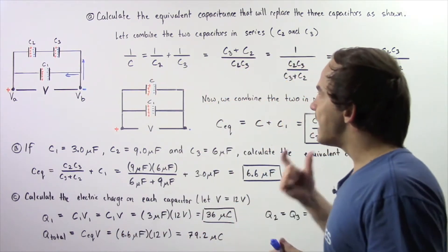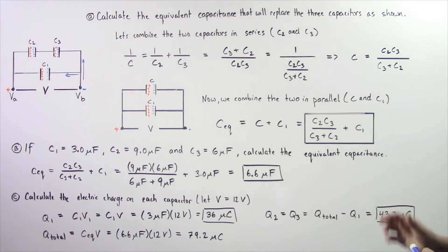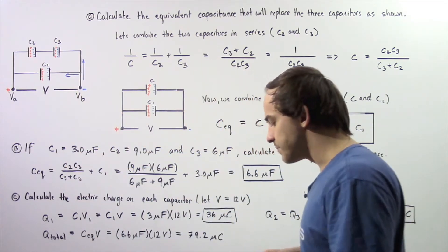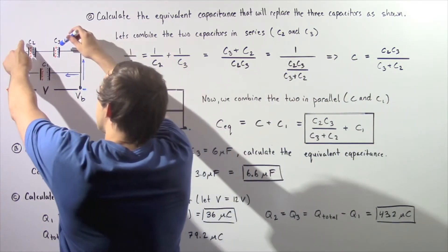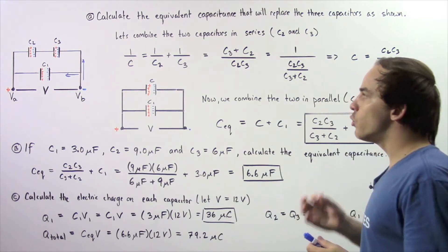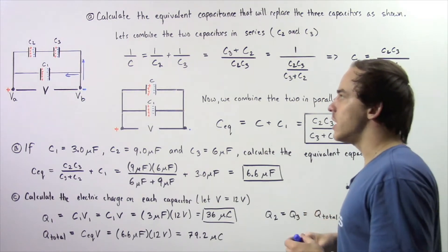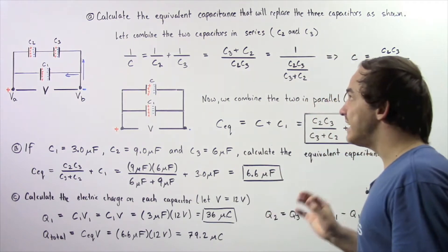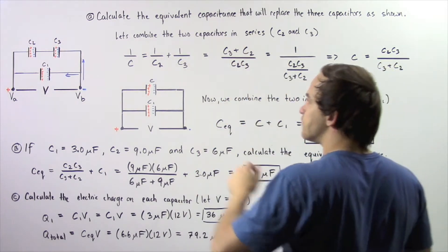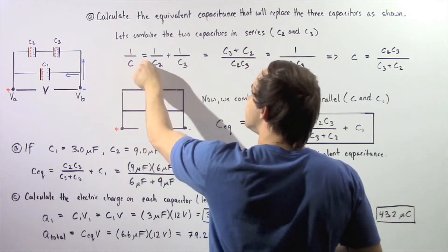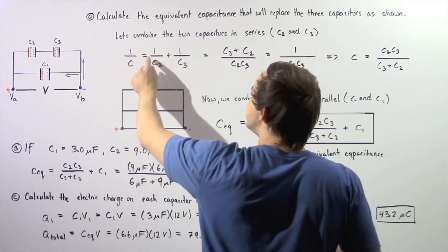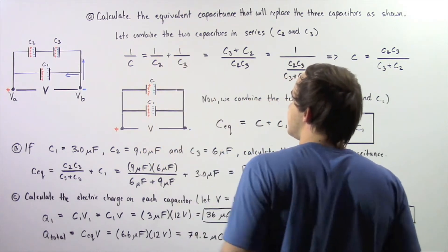Let's begin with Part A: calculate the equivalent capacitance that will replace the three capacitors as shown in the following electric circuit. Let's begin by looking at capacitor two and capacitor number three. We'll combine these two capacitors, which are connected in series to one another. Recall the equation for the equivalent capacitance in the series case: one divided by the equivalent capacitance C is equal to one divided by C2 plus one divided by C3.